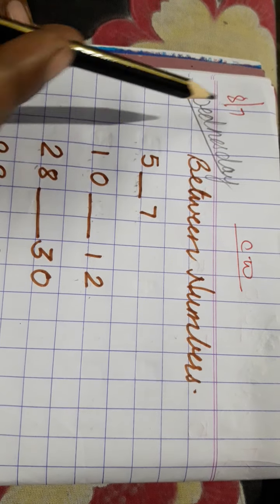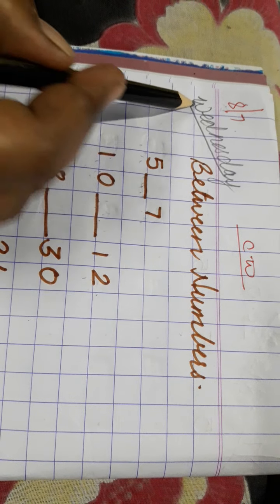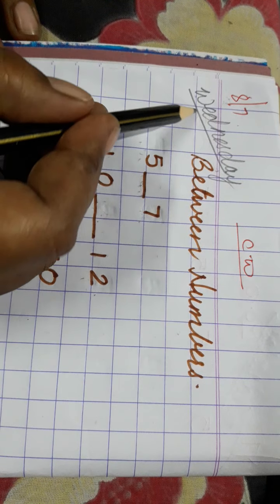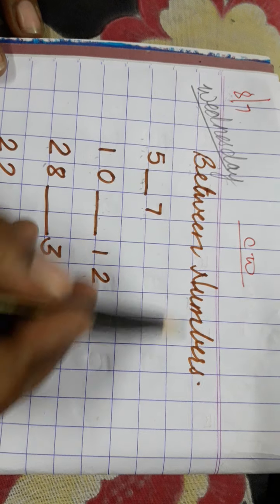Good morning children. Today date is 8th July and what is the day today? Today is Wednesday. Today we are going to learn about between number.